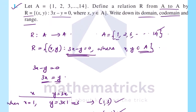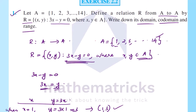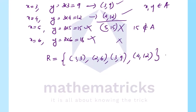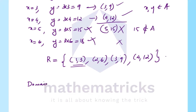We are asked to write down the domain, co-domain and range. The domain is the set of all first elements of the ordered pairs. The first elements are 1, 2, 3, 4. So domain equals {1, 2, 3, 4}.